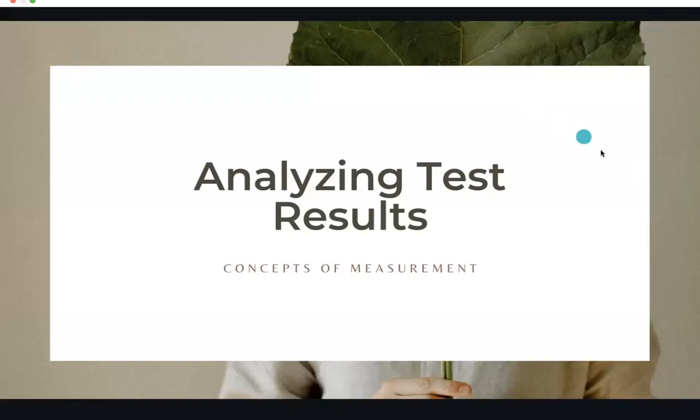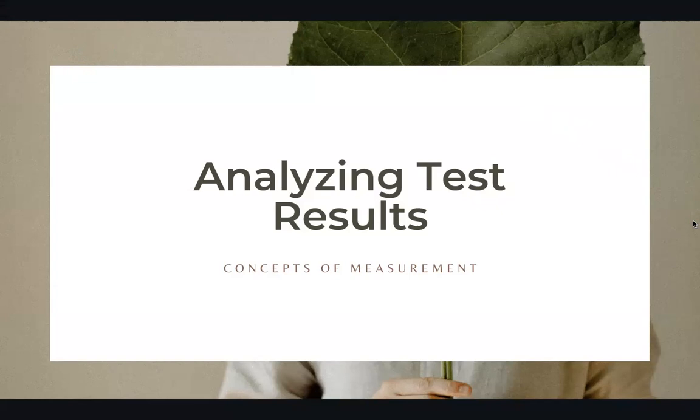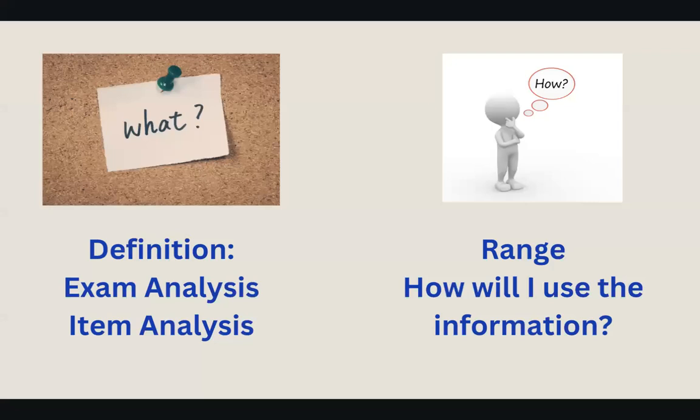When we think about the analysis part, there really are key what we like to call concepts of measurement and that's what Billings and Halstead as well as Dr. Caputi calls it as well. What are these specific terms that we're looking at as we are analyzing and taking a look at that statistical analysis data? So the what, that's what we want to identify and the who and the how. What terms are we talking about in every single snapshot? What does this information mean to us when we look at the exam analysis process? When we look at the item analysis process? What is the definition of each?